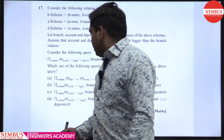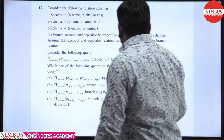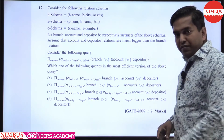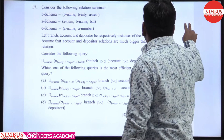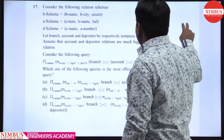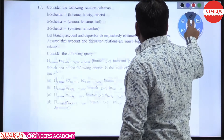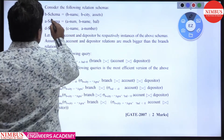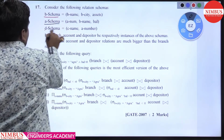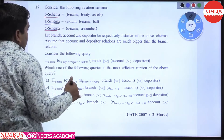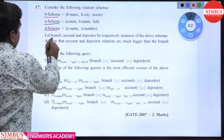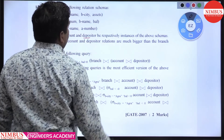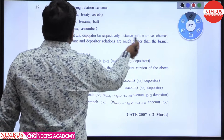Hello students, today we discuss a question that comes in GATE 2007 for two marks. Consider the following relational schema: there is a branch, account, and depositor — three relational schemas — with their respective instances.